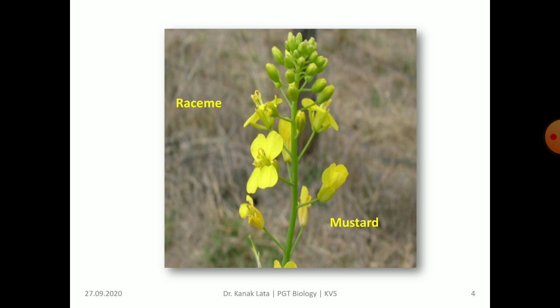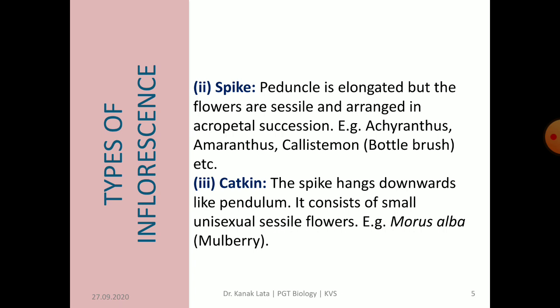In the given figure, you may observe the raceme type of simple inflorescence. Another simple racemose type is spike. In this case, the peduncle is elongated but flowers are sessile and arranged in acropetal succession. For example, it is seen in Acanthus, Amaranthus, and Callistemon, that is bottle brush.